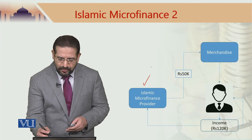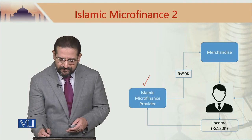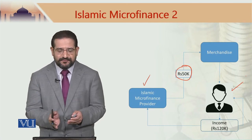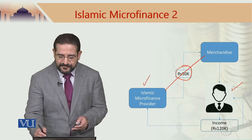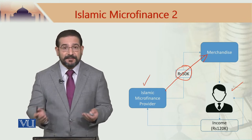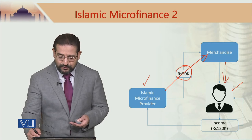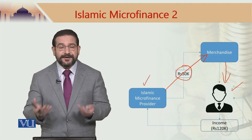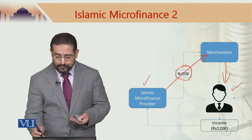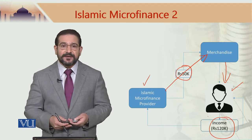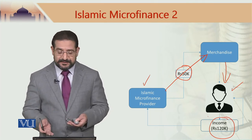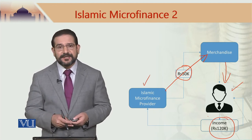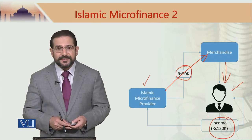The Islamic microfinance provider wants to offer financing of 50,000 to a targeted person. It would buy merchandise from the market and sell it to that person, who would then do trade with it and generate a certain amount of income on a weekly or monthly basis. After one month of trade, the person generates a revenue of 120,000.